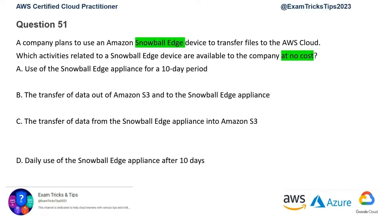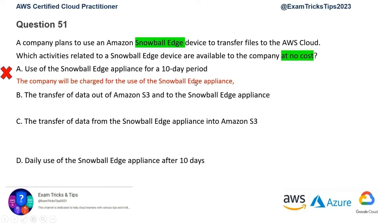So the first option is ruled out. Back to the question — it's a Snowball Edge question, and we need to identify which of the four options is available at no cost. Use of the Snowball Edge appliance for a 10-day period: there is no such free period, so that's a wrong answer. Second option: transfer of data out of Amazon S3 to Snowball Edge appliance. As we know from previous tips, any data transfer out of cloud is not free — whether it's S3, any other storage service, or Snowball — so this is a wrong answer as well.